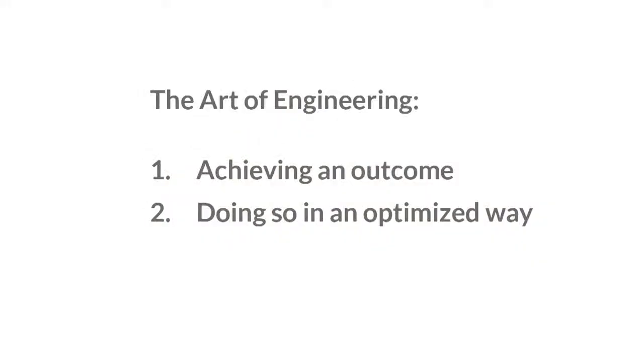The art of engineering has two principal aspects. These are achieving an outcome and doing so in an optimized way, subject to a complex array of limitations and constraints.